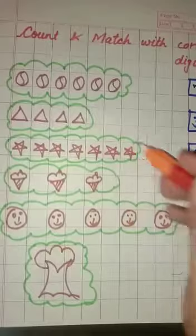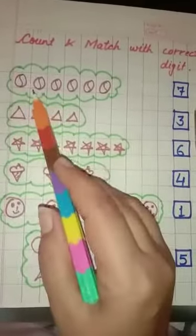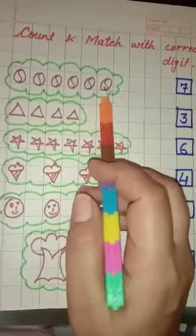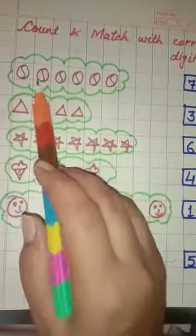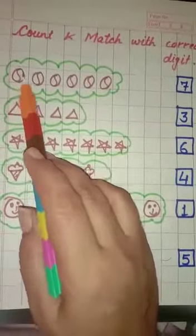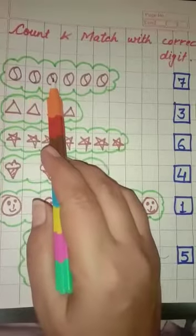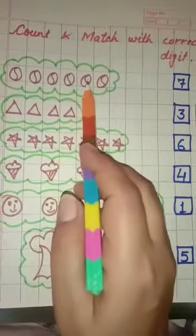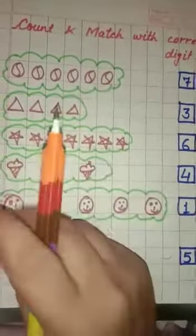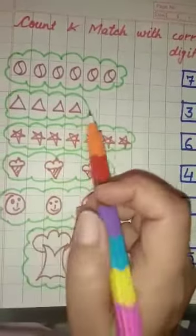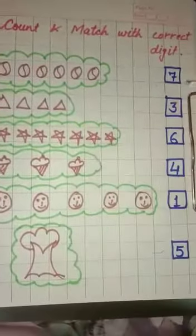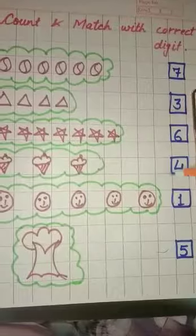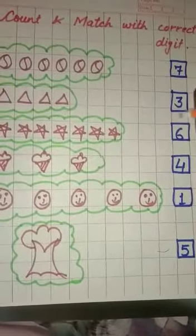Let's start. Firstly, we will count the balls. Okay, count with me. How many balls are here? One, two, three, four, five, six. How many balls are here? Six. Okay, now look at the other side. Where is the digit six?